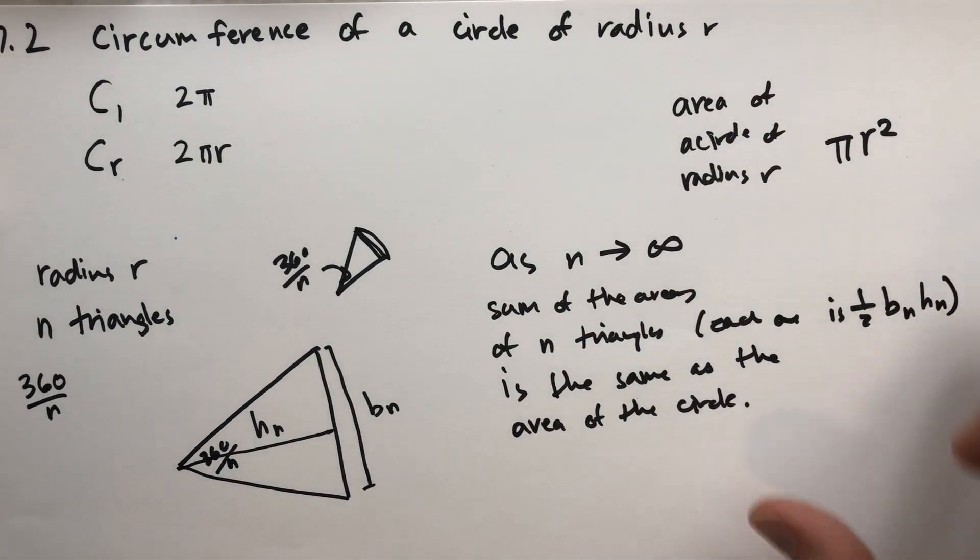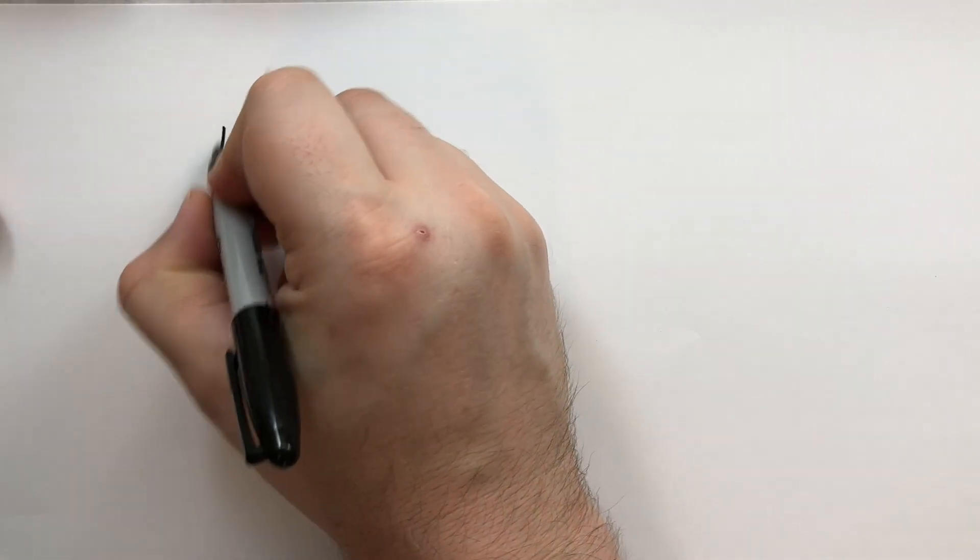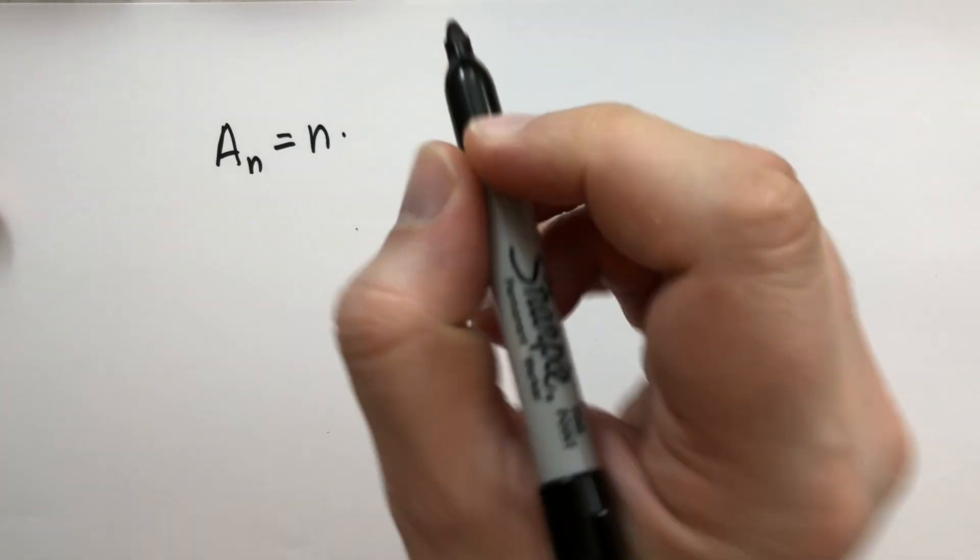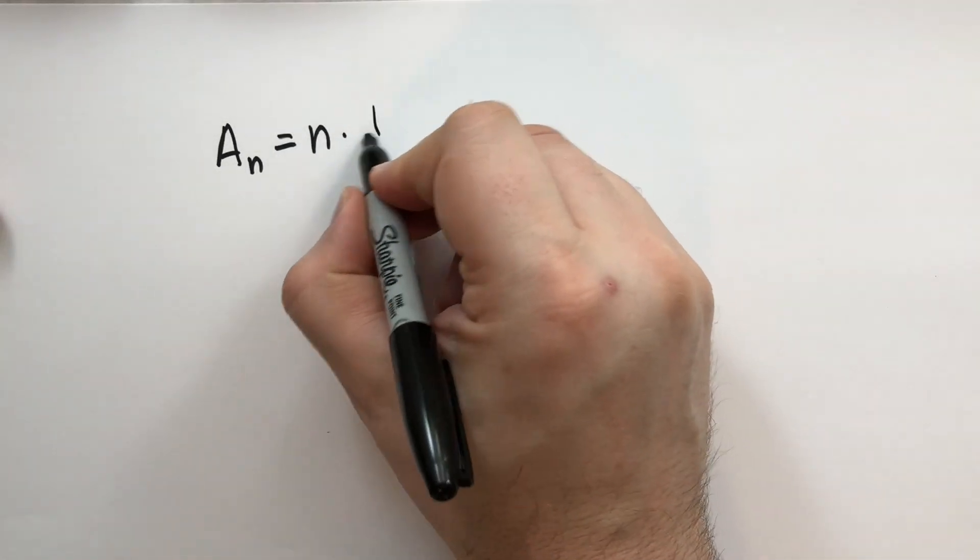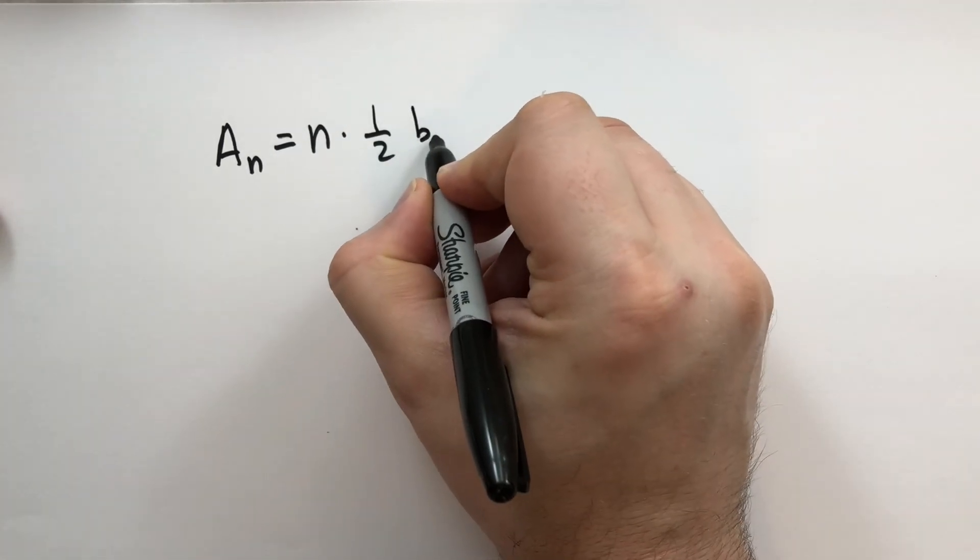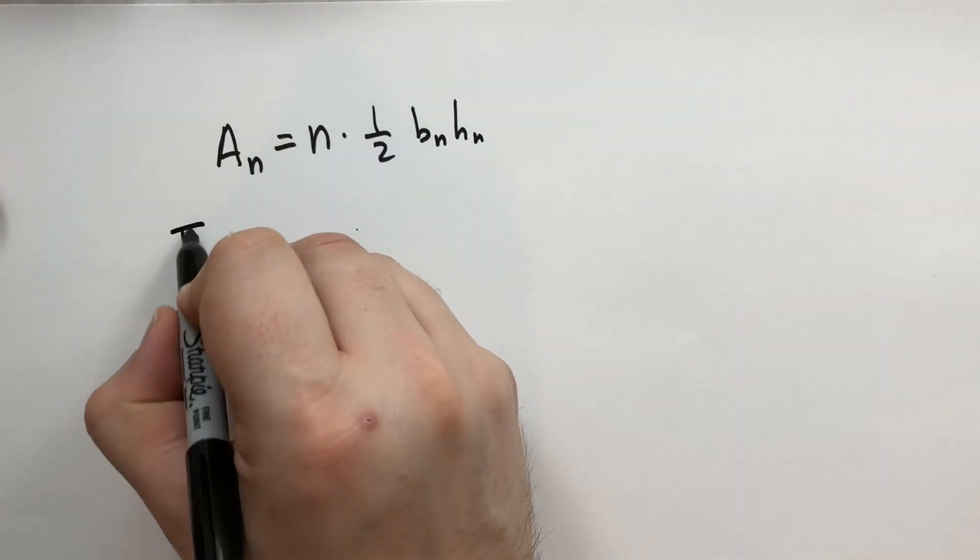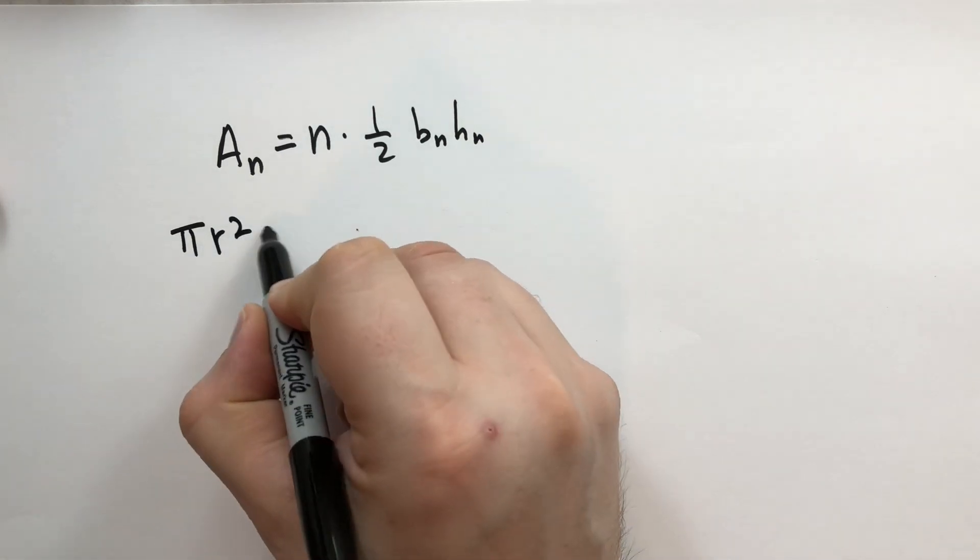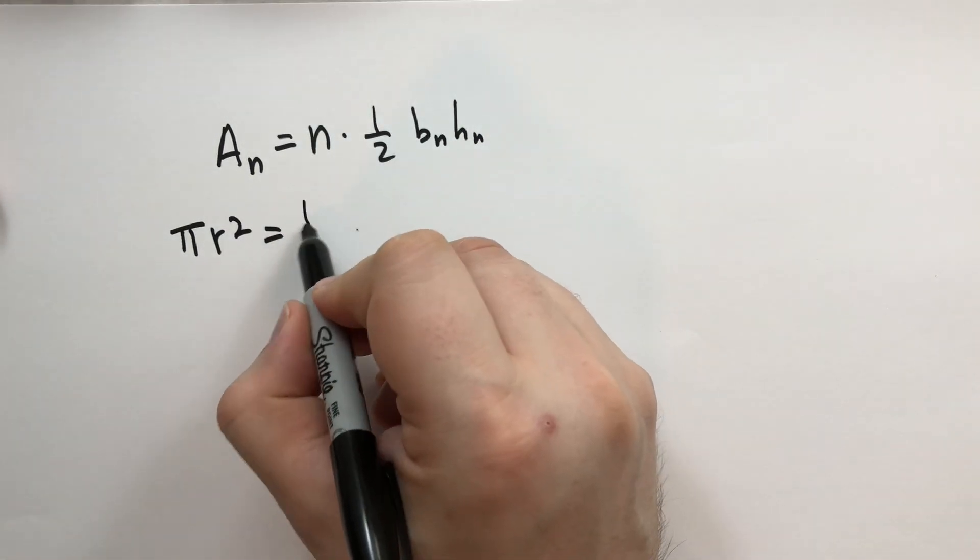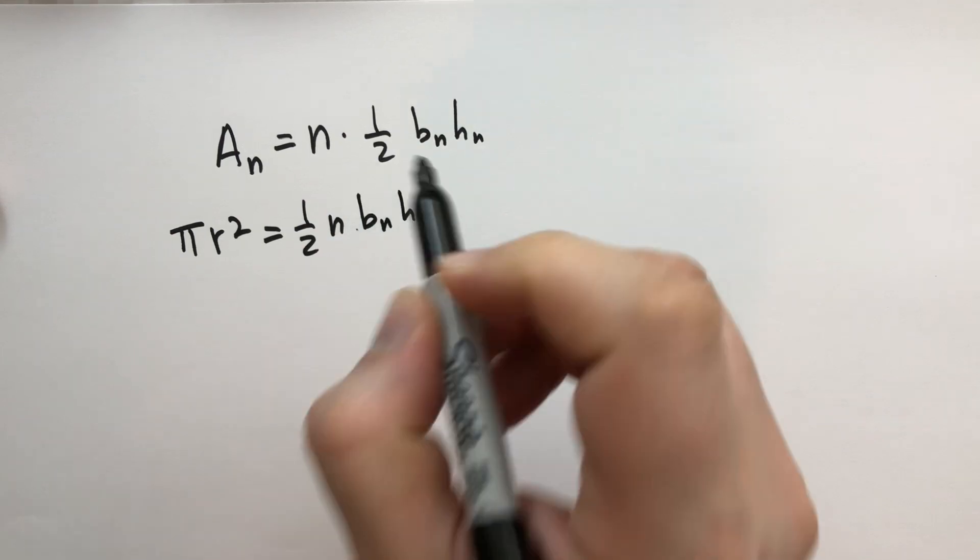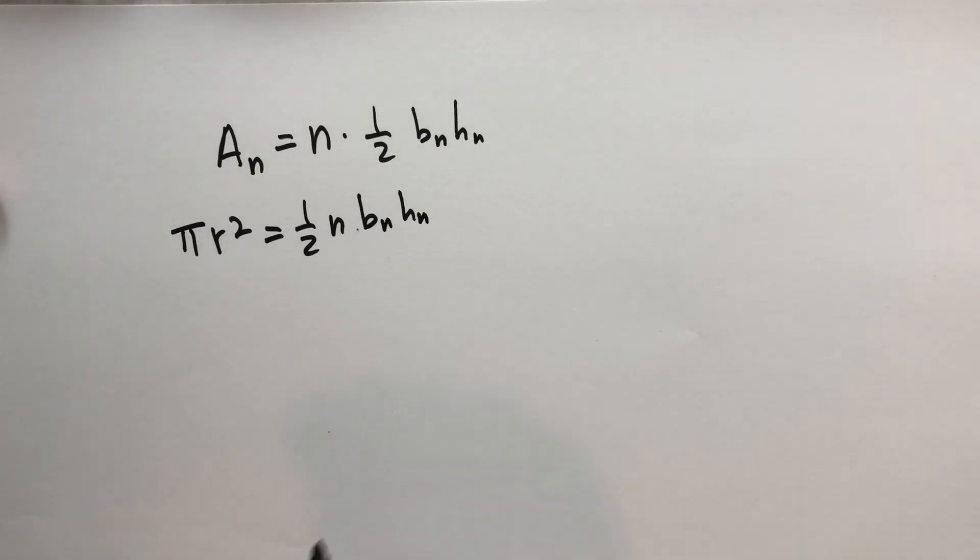So the area of a circle of radius r, the area of n triangles is going to be n times the area of each triangle, which is one half the base b_n times the height of nth triangle h_n. And this is going to be πr². And then we're going to have one half n·b_n·h_n.